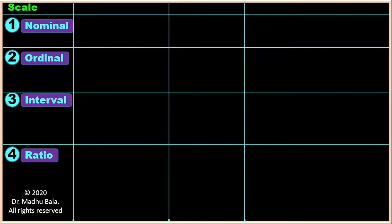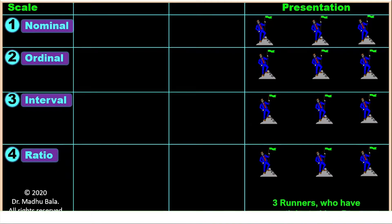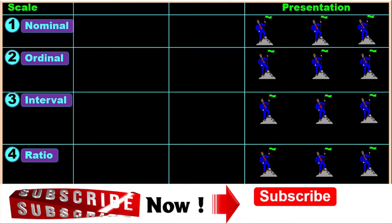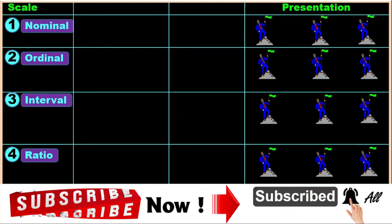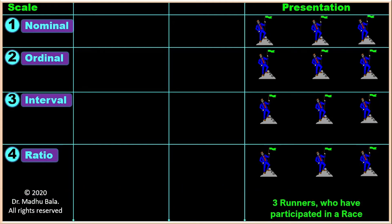These are the four scales: nominal, ordinal, interval, and ratio. This presentation shows three runners who have participated in a race. You will understand the four scales with the help of this presentation.